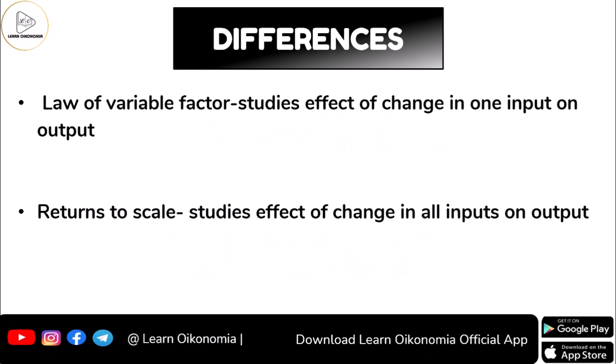In the case of returns to a factor, we study the effect of a change in one input on output. As mentioned, we are just looking at the role of labor change on output, with capital held constant. In returns to scale, we look at the change in all inputs and the effect of that change on output — so we change all factors and observe the role of changing all factors on output.